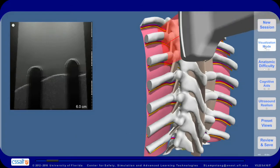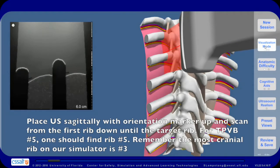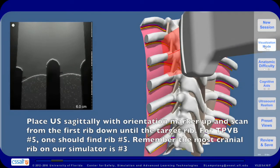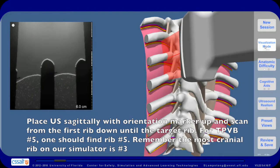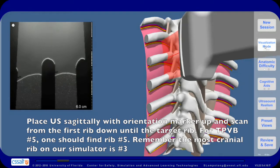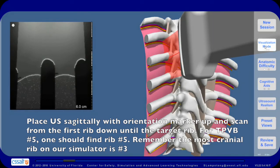Note that counting ribs with an ultrasound is preferred when it is difficult to palpate spinous processes. Place the ultrasound sagittally with the orientation marker up and scan from the first rib down until the target rib. For TPVB number 5, one should find rib number 5.